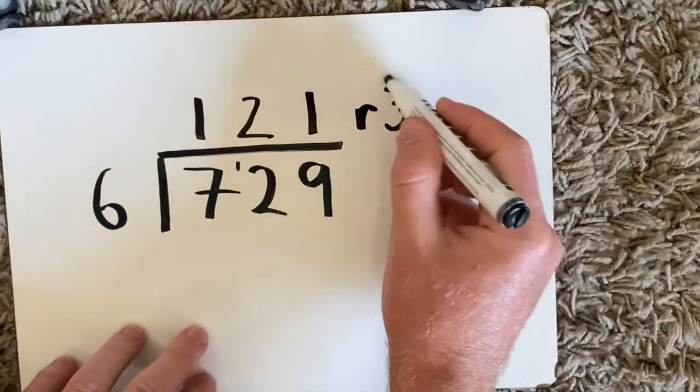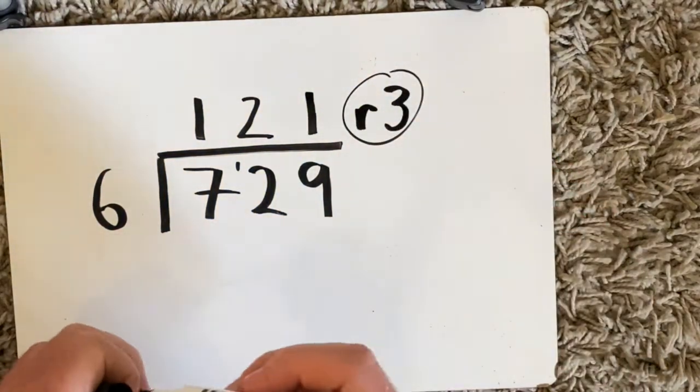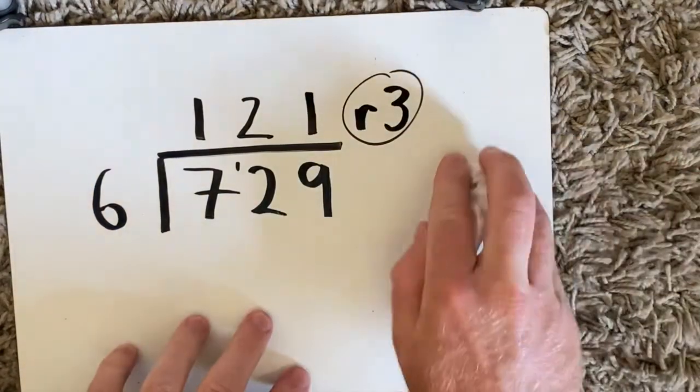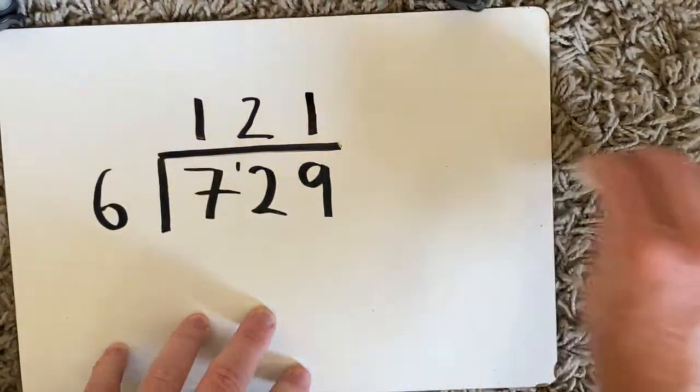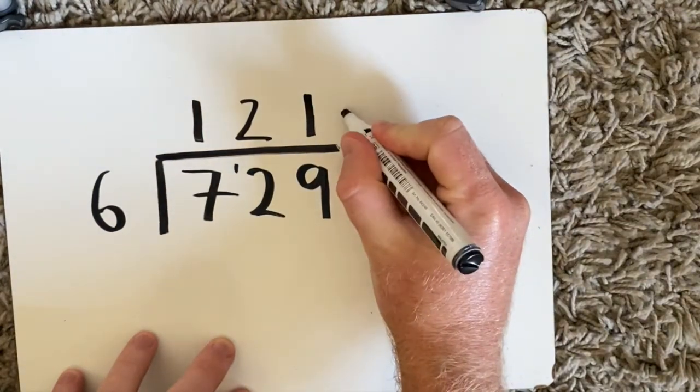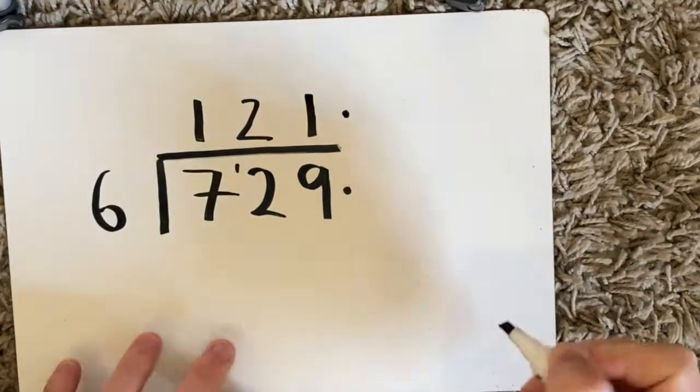So what I'm going to do is change this remainder into a decimal. I'm going to get rid of the remainder 3 and instead put decimal point, decimal point.